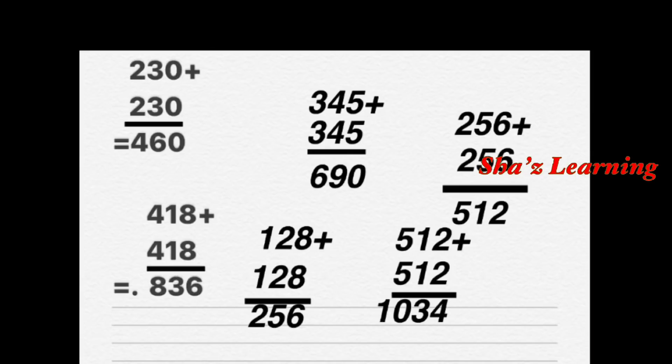345 plus 345: 5 plus 5 is 10, write 0 carry 1. 4 plus 4 is 8, plus 1 is 9. 3 plus 3 is 6. That is 690.